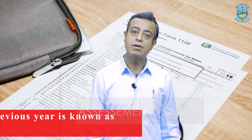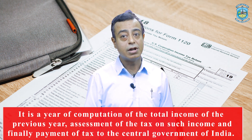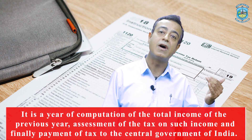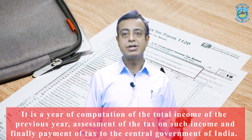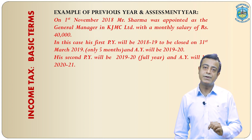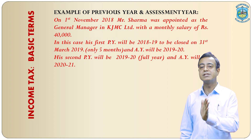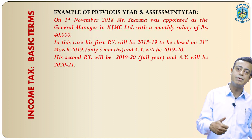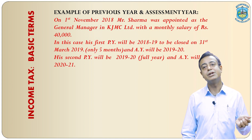Assessment year. Assessment year is a particular year just next to the previous year. Why is it known as assessment year? In this particular year we have to calculate the total income of the previous year, calculate tax on that total income, and finally pay income tax to the government. For example, suppose Mr. Sharma started his business on 1st November 2018. His first previous year will close on 31st March 2019 — it is known as previous year 2018-19, and assessment year will be 2019-20. This particular previous year is valid for only 5 months because he started business on 1st November. In the next year, his previous year will be 2019-20 and his assessment year will be 2020-21.